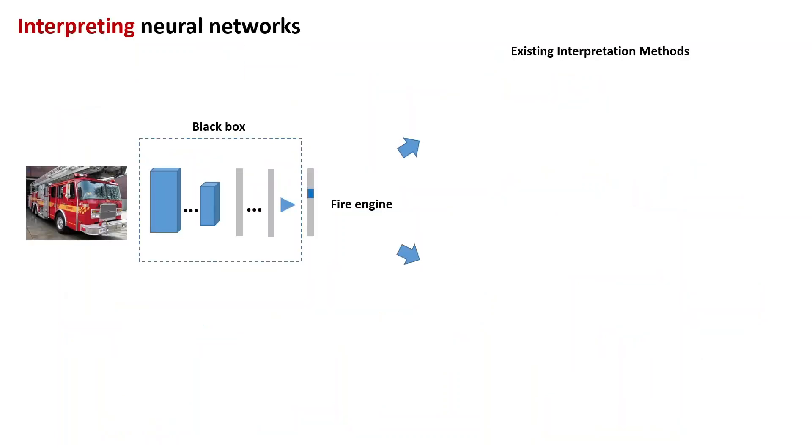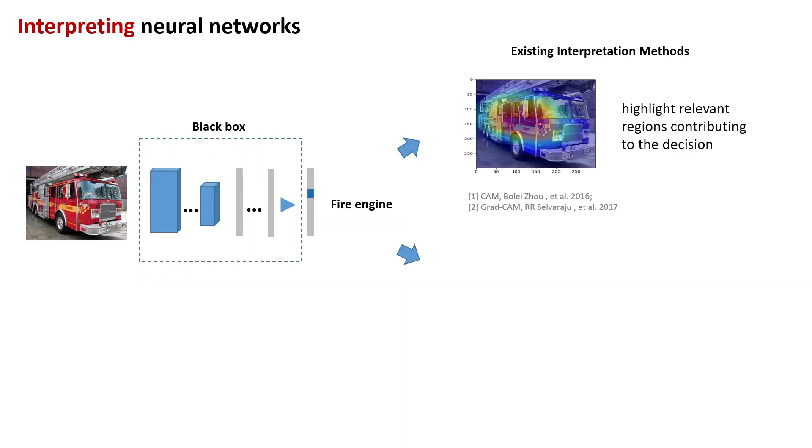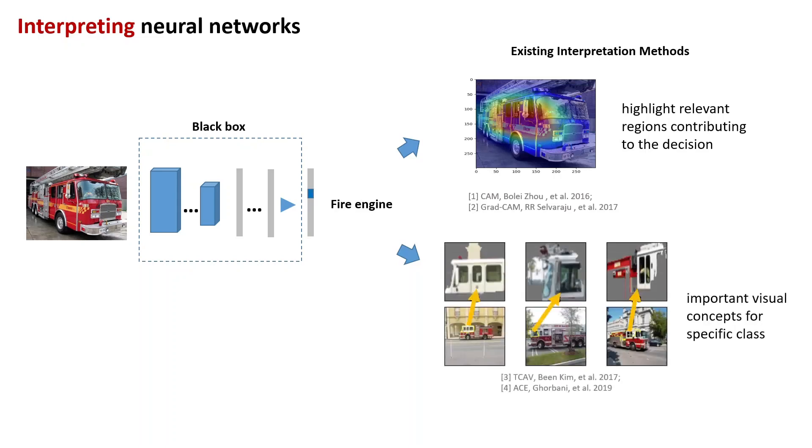To consider the challenging problem of interpreting the decision of a neural network, existing methods use pixel-level interpreting to highlight relevant regions contributing to the decision, and concept-level explanations to find important neural concepts for a specific class. However, they only visualize low-level correlations between input pixels and prediction. There is no high-level reasoning, for example, why class A instead of B?